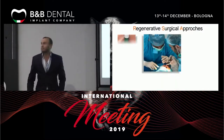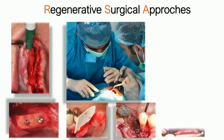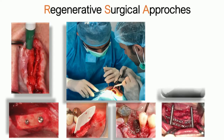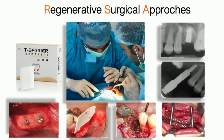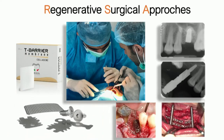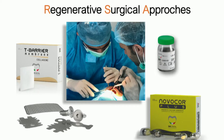The first option is the regenerative approach. Several surgical techniques have been proposed over the years: ridge augmentation, onlay/inlay crest grafting, GBR, distraction osteogenesis, and sinus lift. These techniques use different materials — autologous, heterologous such as bovine bone, synthetic or natural grafting materials like Novocore — covered with resorbable or non-resorbable membranes.